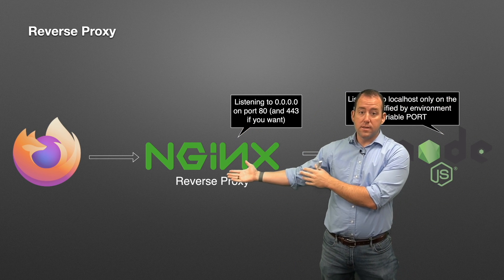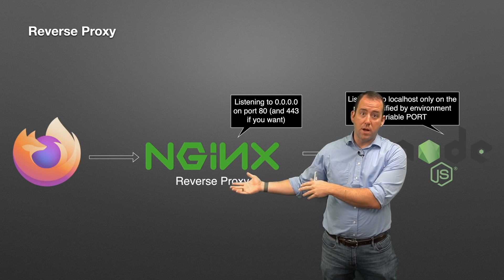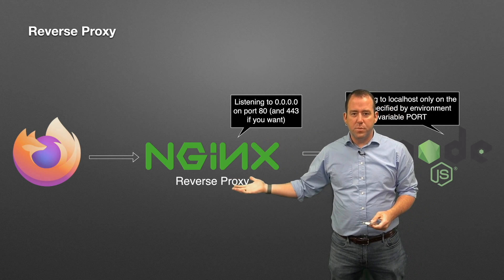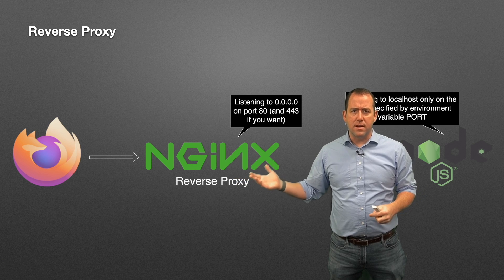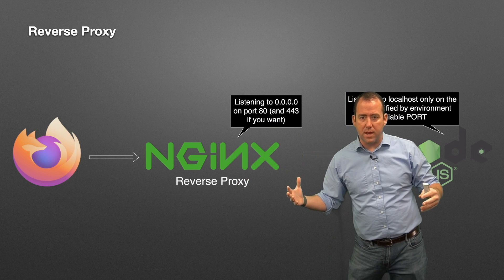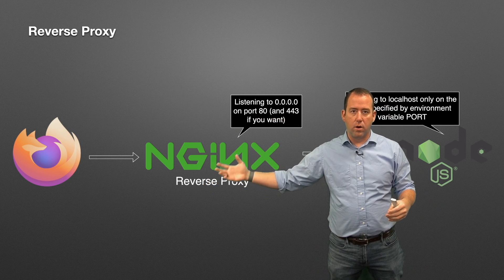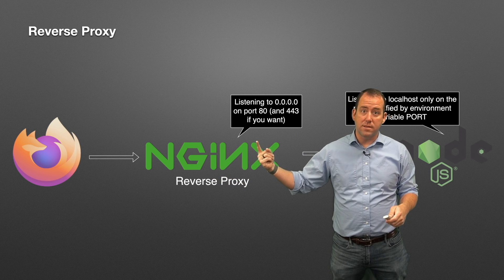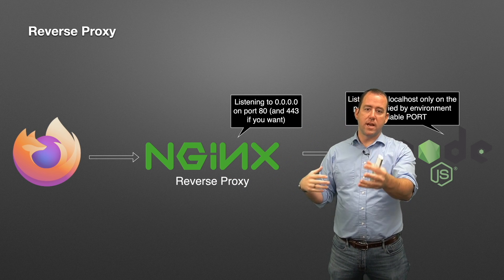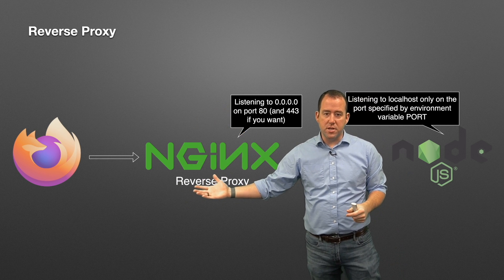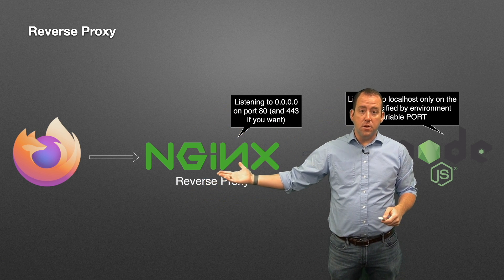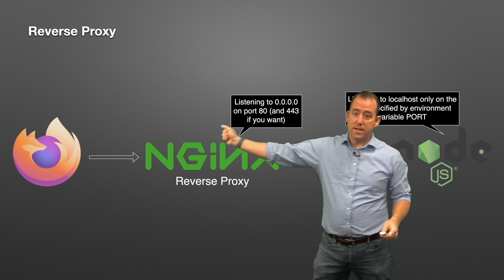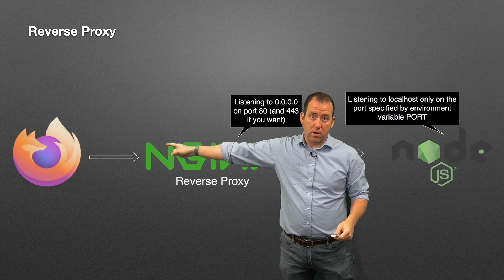The reason it does that is because Elastic Beanstalk sets up a reverse proxy for you — you don't have to do it yourself. Reverse proxying is best practice for deployed applications. Nginx or Apache, as reverse proxies, can handle things like adding HTTPS encryption really well. So you have Nginx running as a reverse proxy, listening on port 80, and port 443 if you add HTTPS.